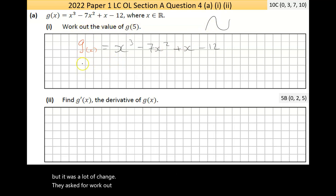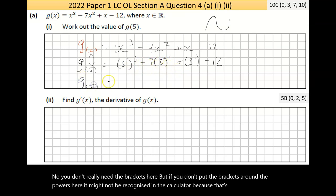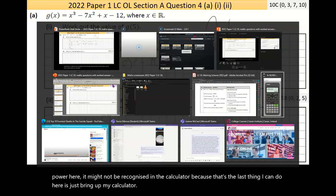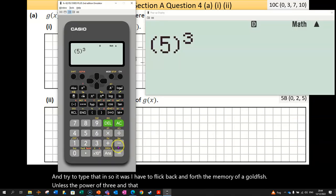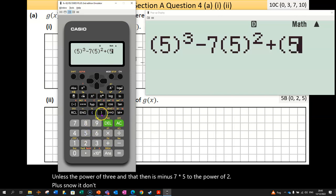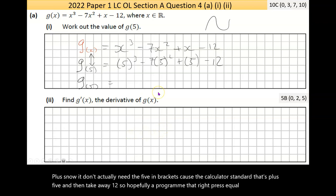Now, they asked me for work out the value of g of 5. If I write g of 5 below here, hopefully it makes the connection that x is 5. And if you make that realization, all I have to do the whole way across is everywhere I see x, swap it with 5 in brackets. Now, you don't really need the brackets here, but if you don't put the brackets around the powers here, it might not be recognized by the calculator.